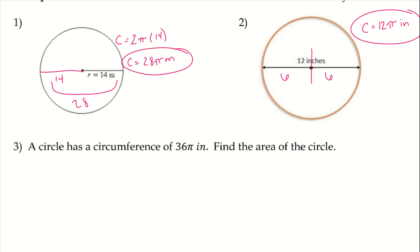A circle has a circumference of 36π inches. Find the area. It's giving us the circumference and we want to find the area, so we need to know the difference. The area equals πR squared, and the circumference is 2πr or Dπ.